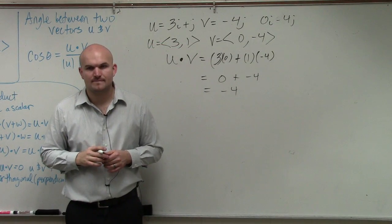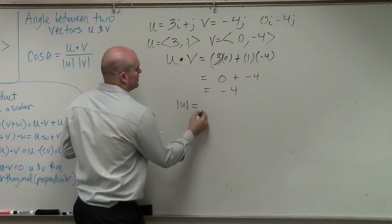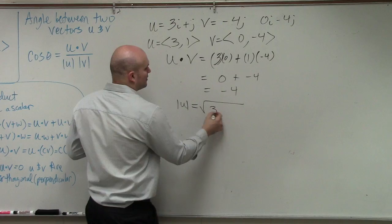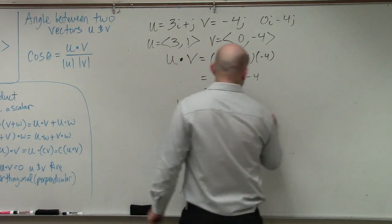Does everybody see that? Now we need to figure out the magnitude of u. That's going to be the square root of 3 squared plus 1 squared, which equals the square root of 10.